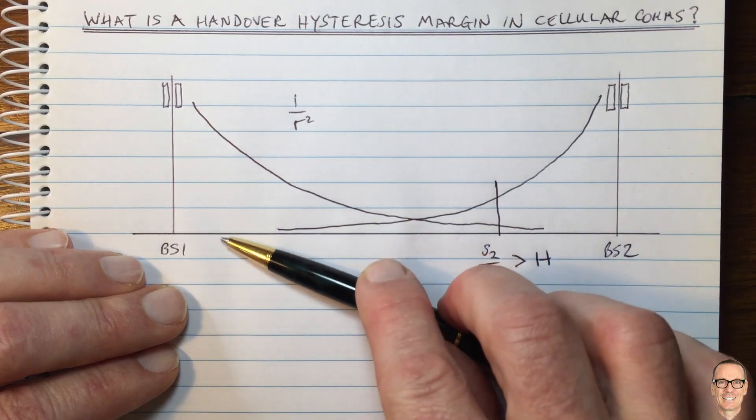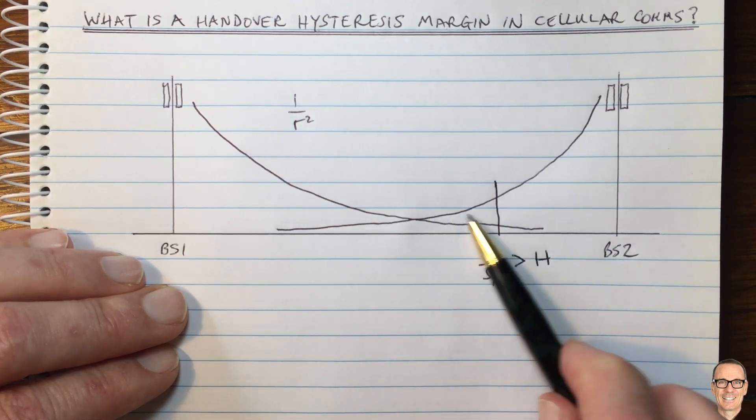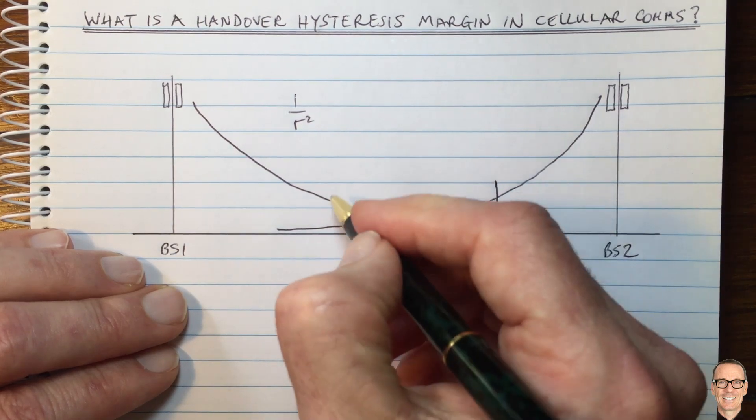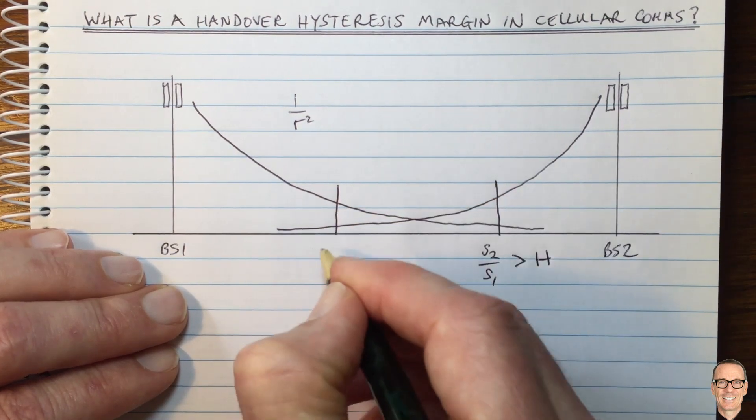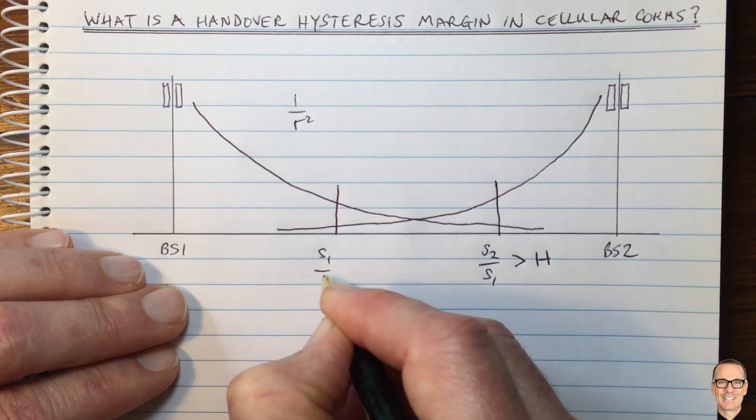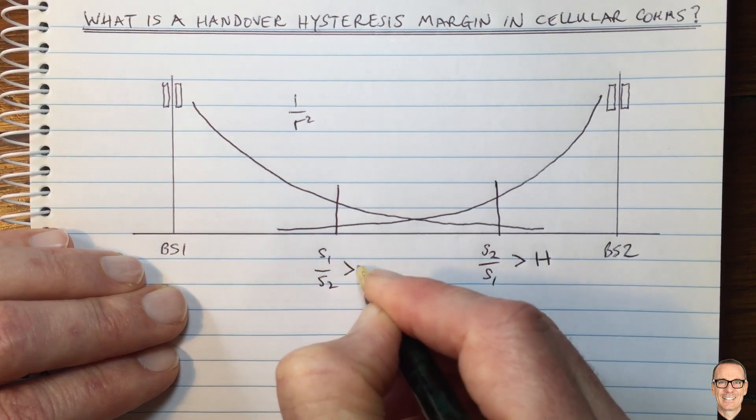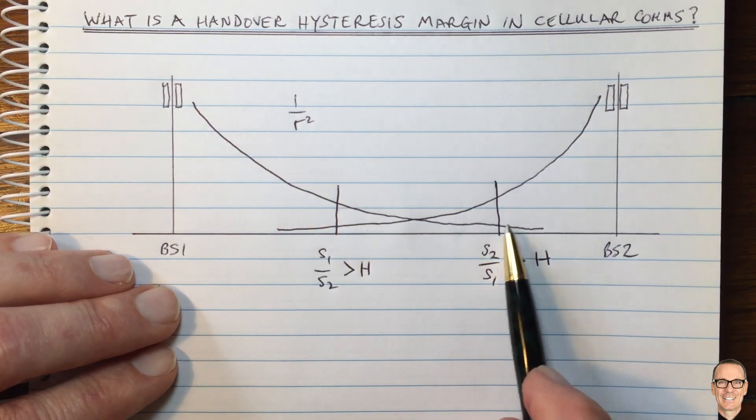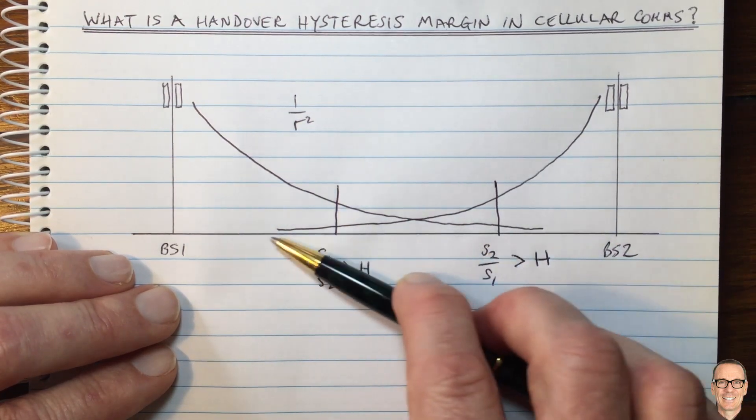And of course, if we're going back in the other direction, we won't switch until we get close to base station 1 such that there is a hysteresis margin here where signal 1 is bigger than signal 2 by that hysteresis margin. And so this is why it's hysteresis because in this direction, you only change here. And if you're coming back in this direction, you change over here.